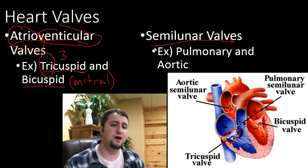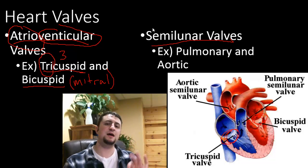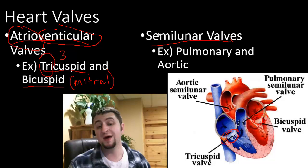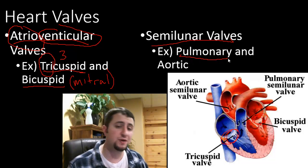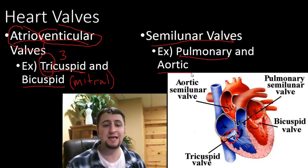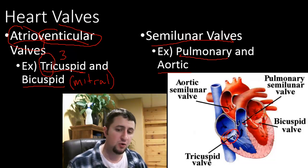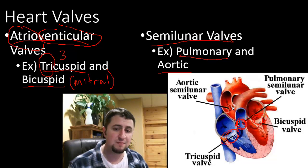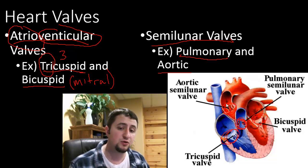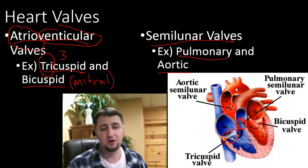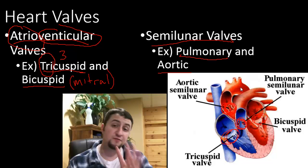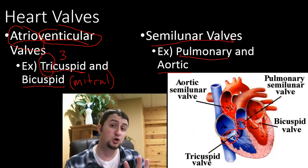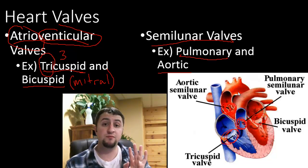The semilunar valves are valves that control blood flow out of the heart. We have two of them: one is called the pulmonary semilunar valve and the other is the aortic semilunar valve. The pulmonary one is right here and the aortic semilunar valve is right here. We will focus on that a little more in class. Just know there are four major valves to the heart.